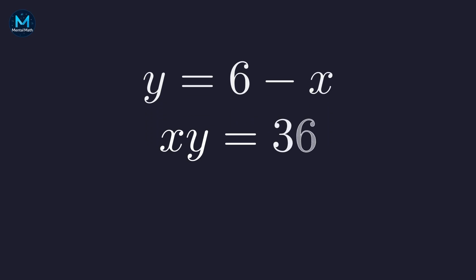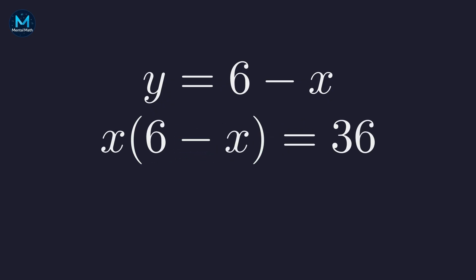Now let's bring in the second equation, x times y equals 36. Here's where substitution comes in. We'll replace y with our expression from before. And just like that, we've eliminated y, leaving us with an equation that only involves x.